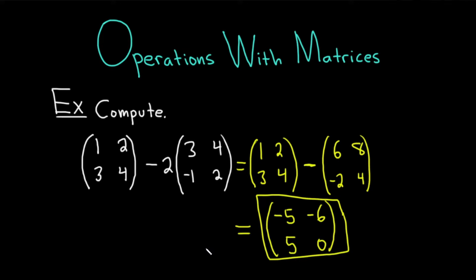Let's go ahead and do some matrix multiplication, because the addition and subtraction is pretty easy — you just add or subtract the corresponding entries. But the multiplication is where it gets a little bit more complicated.